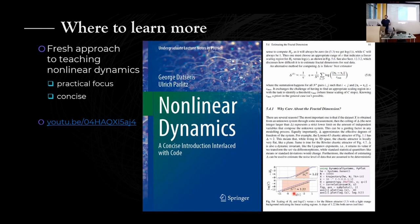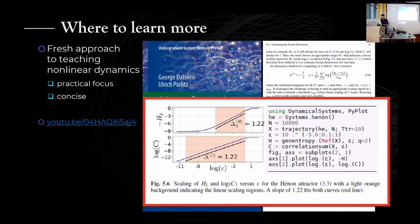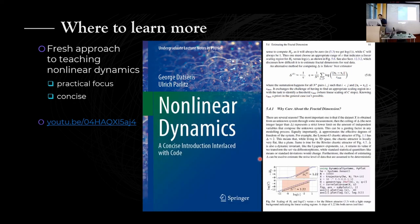If you thought these things are cool and would like to learn more, almost everything I said comes from a book we just published: Nonlinear Dynamics with Ulrich Parlitz, published by Springer. It has a fresh, fully practical and hands-on approach to teaching nonlinear dynamics, is concise so you can read it relatively fast, and includes actual code in the book pages — for example, showing how to compute the correlation sum versus epsilon and find the fractal dimension. That's it — thanks for your attention.